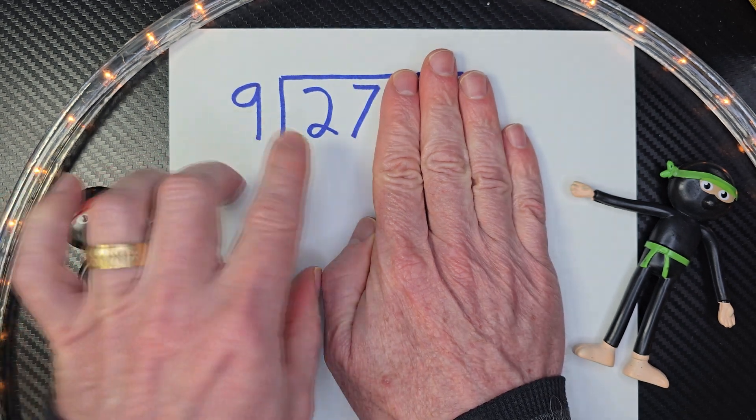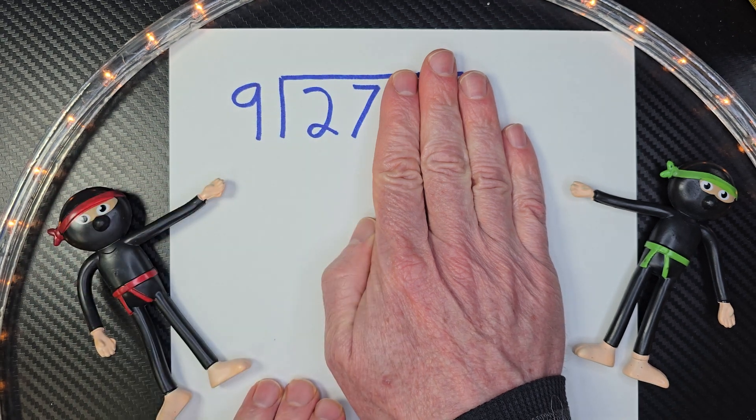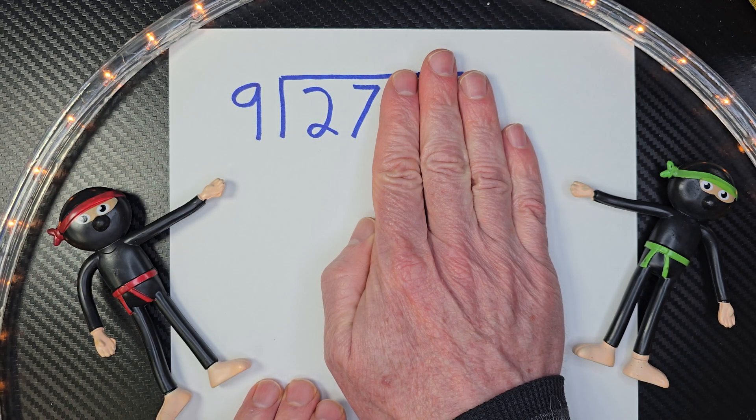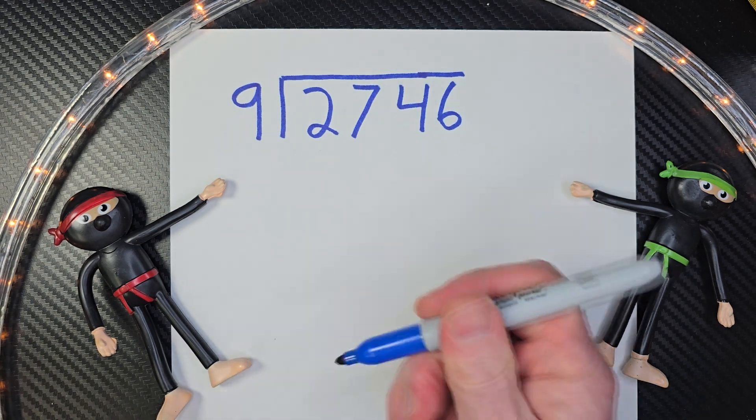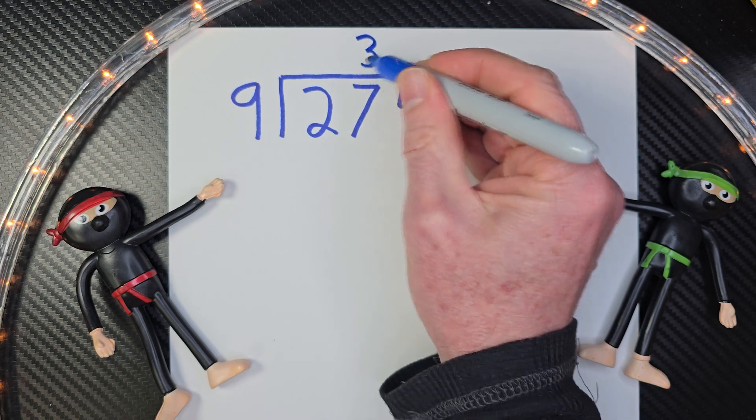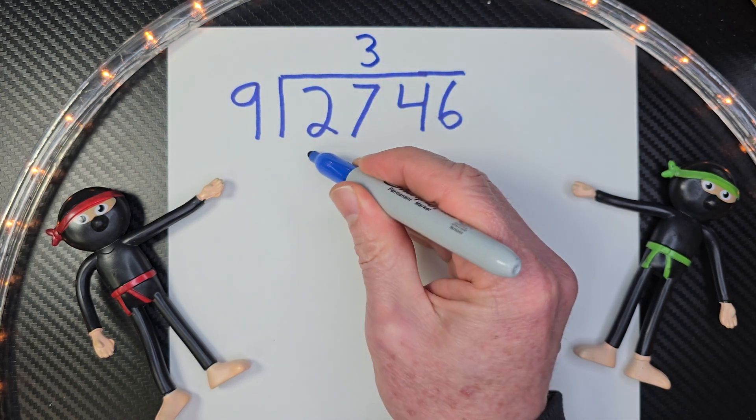How many times does 9 go into 27? Well, 9 times 2 is 18. 9 times 3, 27. So we're going to go ahead and put the 3 right here, and then 3 times 9 is 27.